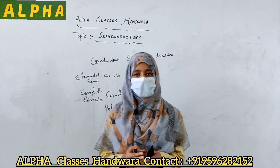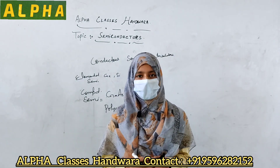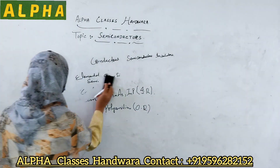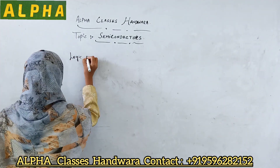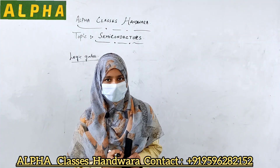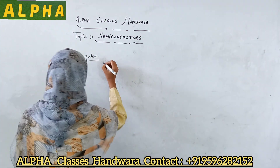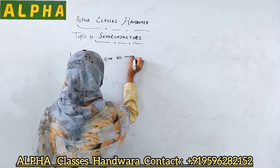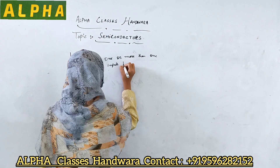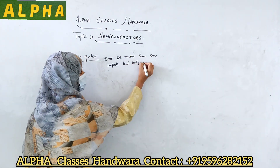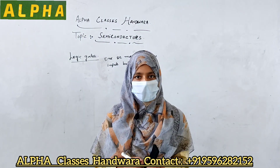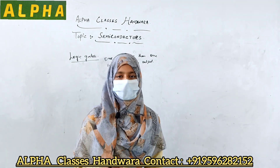We can also define semiconductors on the basis of the energy band diagram, but that is not our topic. Our topic is Logic Gates. Now let us move towards Logic Gates. Logic Gates are the digital circuits with one or more than one input and only one output. These are the circuits used to produce digital signals. There are three basic Logic Gates: OR gate, AND gate, and NOT gate. We will discuss them one by one.